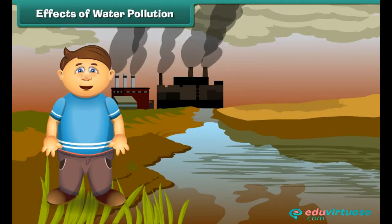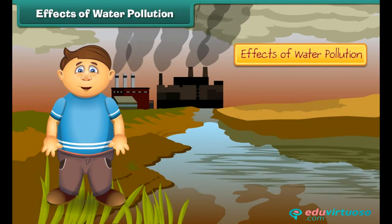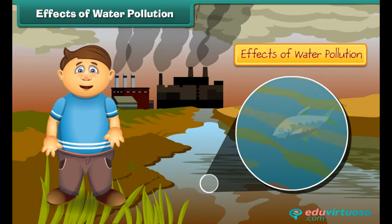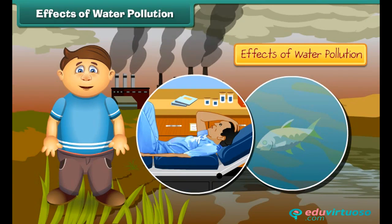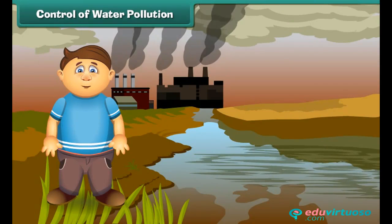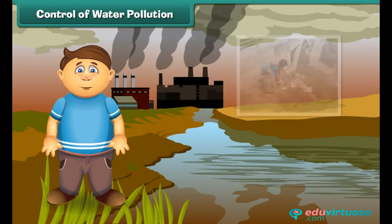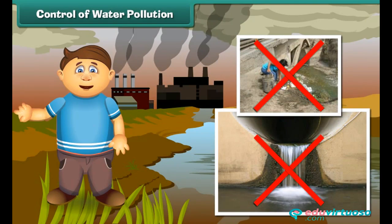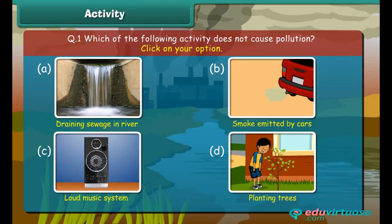What are the effects of water pollution? Poisonous chemicals released from factories and industries enter water bodies, due to which marine life is getting affected. If we consume such fish, we will also fall ill. Can we control water pollution? The answer is yes. To control water pollution, we should not dispose garbage and harmful chemicals directly into ponds, lakes, and rivers.